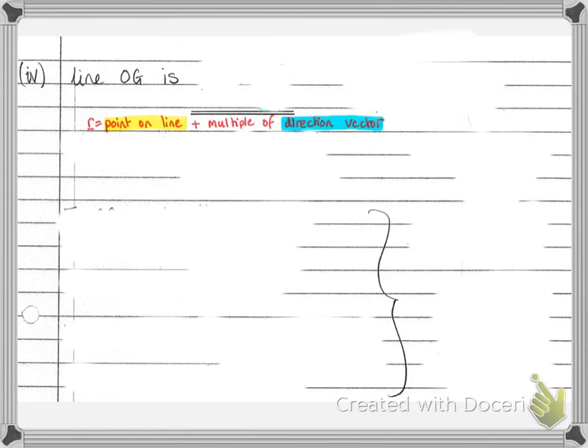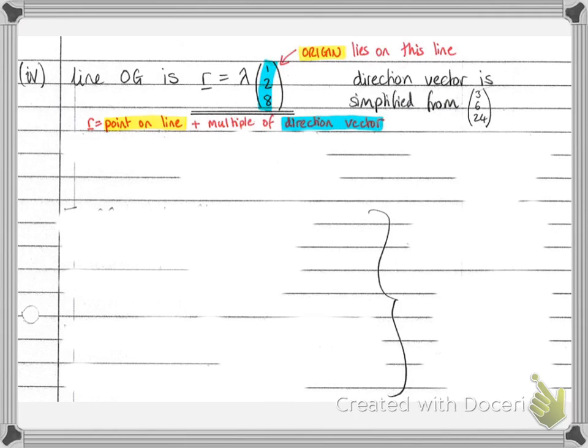So now we're writing down these equations of lines. So the line OG, we're going to use this way of writing vector equations of lines, that you get a point on the line plus a multiple of the direction vector. Now the origin lies on the line OG, so we don't really need to write the point on the line. So we get r equals lambda multiplied by the direction vector. And this is the direction vector of OG, where G had coordinates 3, 6, 24. So the direction vector could be 3, 6, 24. But if we divide everything through by 3, and we can simplify direction vectors, then we do get this simpler form. It's always okay to simplify a direction vector, because a shorter vector in the same direction still goes in the same direction. We must not simplify position vectors, because then we would change the coordinates of the point.